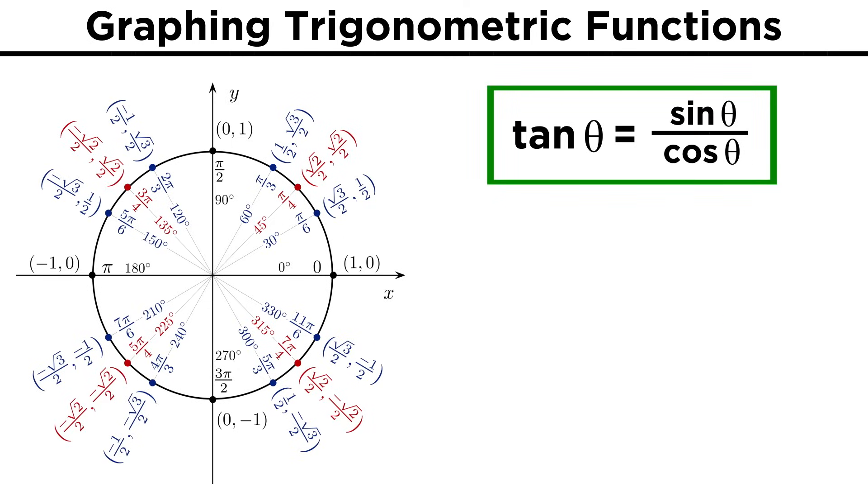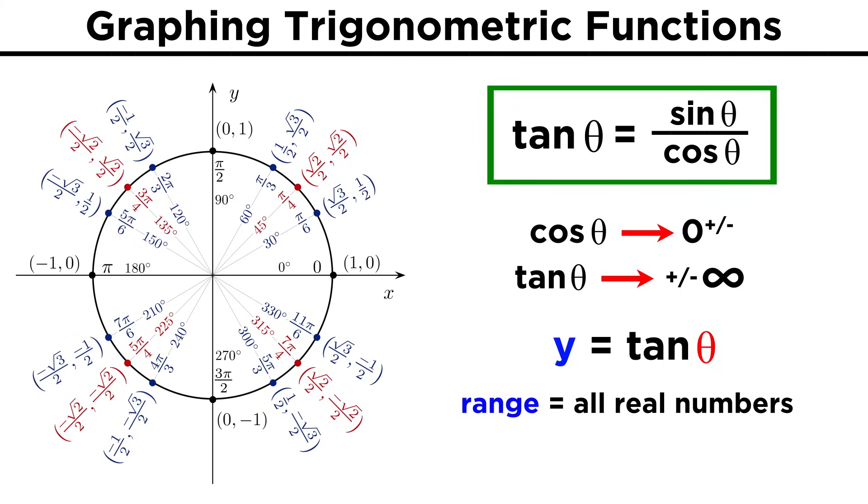Tangent is different, because that's sine over cosine, and as cosine gets very close to zero in either direction, the function gets very big, approaching infinity. So the range of tangent theta will be all real numbers.